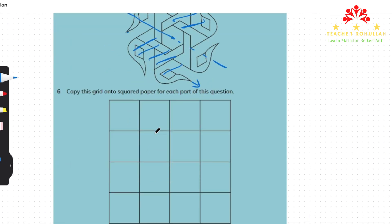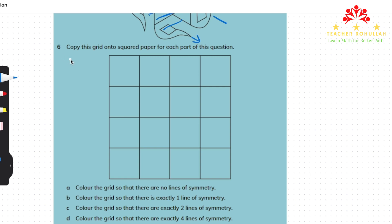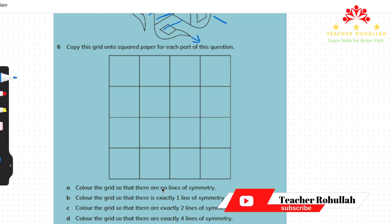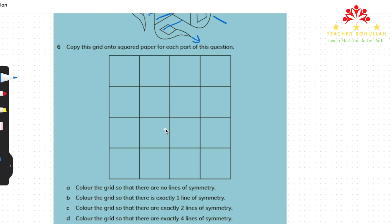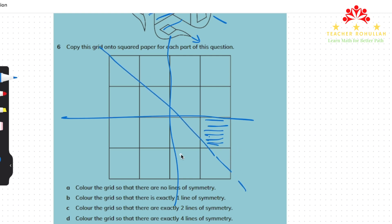In question six it says: copy this grid onto squared paper. The question has four parts. Part A says: color the grid so that there are no lines of symmetry. If I color only one part of the grid, we will not have any lines of symmetry because if we draw any line - horizontal, vertical, or diagonal - one side is shaded but the other side is not. Shading only this one part means no lines of symmetry.